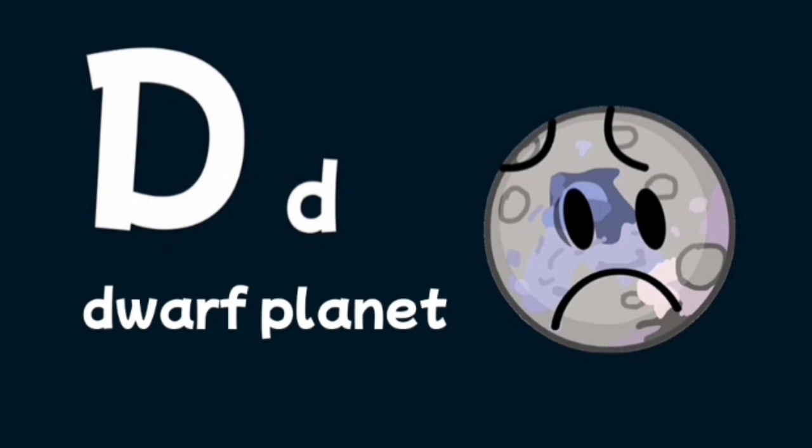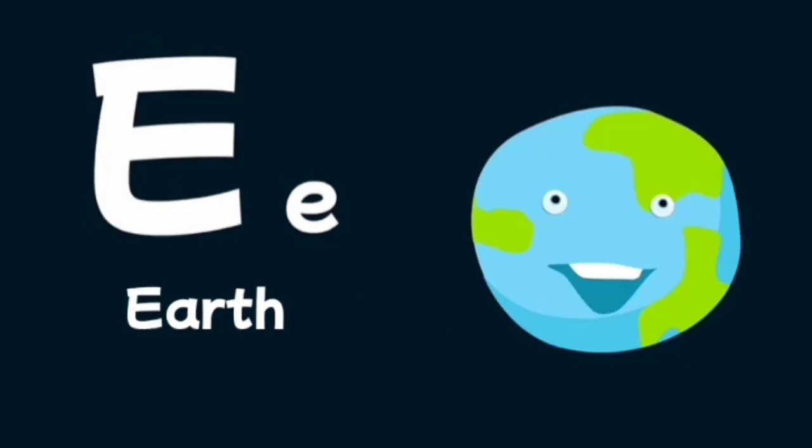D is for dwarf planet, an object in space that circles the sun but is not a planet. E is for Earth, a planet in the solar system that we live on.